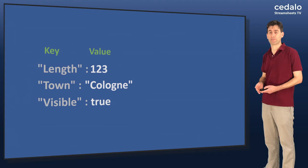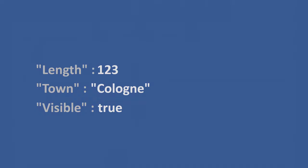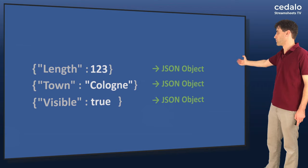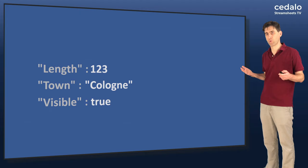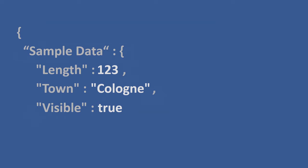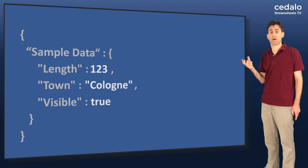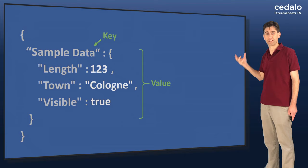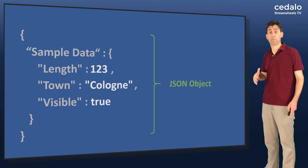So we can say that our 123 is representing a length, Cologne is representing a town, and true is representing a visibility of something or other. So we have this key and a value that gives us more context about the data. If we want to turn that into a JSON object, what we do is very straightforward — we simply enclose the different objects in curly brackets. So we now have a JSON object, and we can apply the same thing to our other examples. So we now have three separate JSON objects. But what if we want to combine them all together into a single JSON object? We add curly brackets at the top and bottom and then add a further key — the sample data key — and the value for that is our length, town, and visible objects nested beneath it. Combined together, we get the JSON object as we see here.